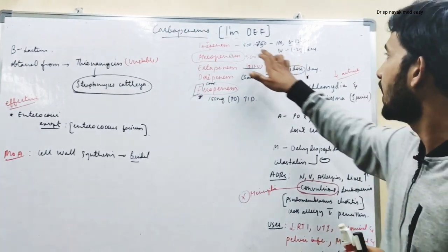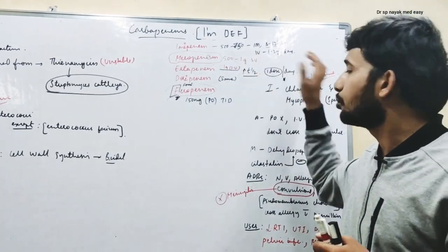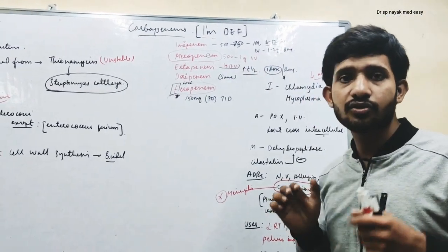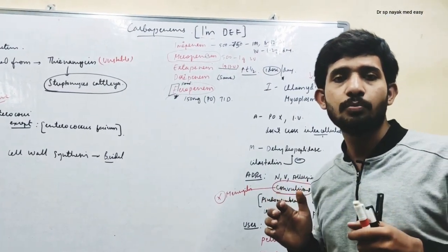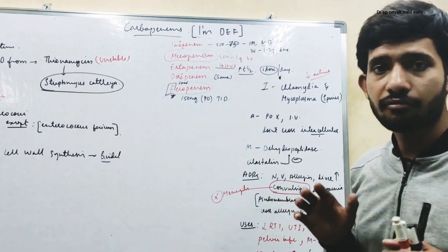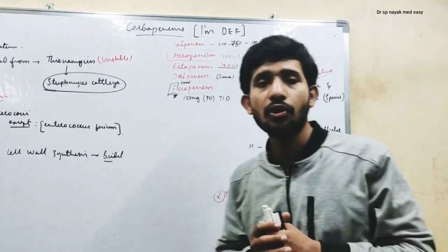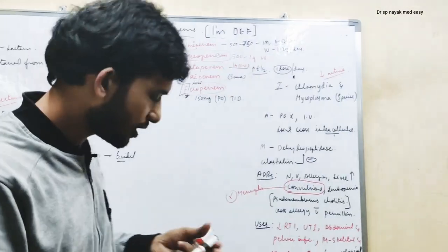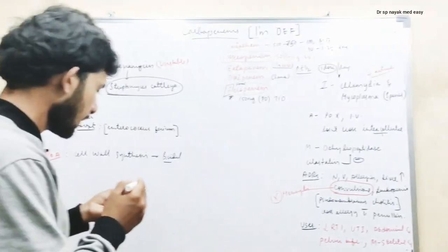We also give imipenem in IV infusion form — one to two grams per day given in one to two divided doses, so 500 mg to two grams is the common dose per day. Now let us understand the mechanism of imipenem.